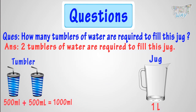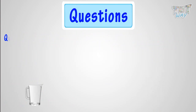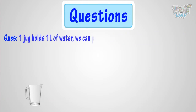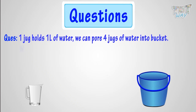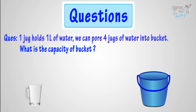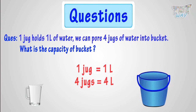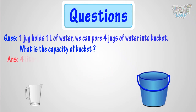Now, let's move on to the next question. One jug holds 1 liter of water. We can pour 4 jugs of water in a bucket. Then, what is the capacity of the bucket? Let's solve this question. Capacity of the jug is 1 liter, and we can pour 4 jugs of water in the bucket. 4 jugs means 4 liters of water. So, the capacity of the bucket is 4 liters.